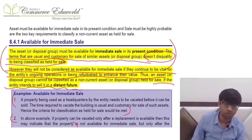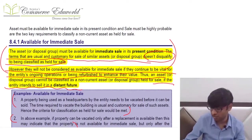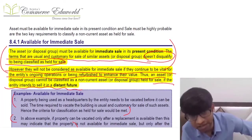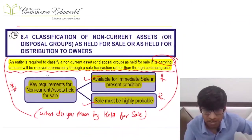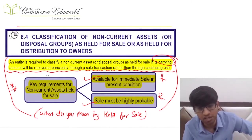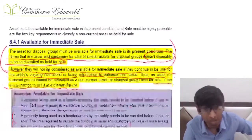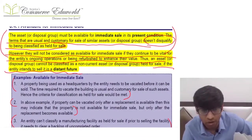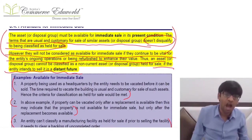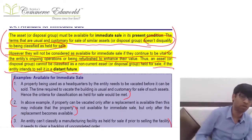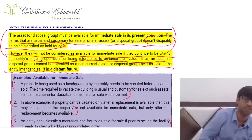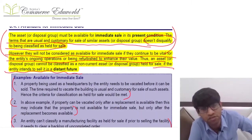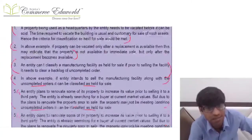However, if an asset is subject to usual or customary terms and conditions — such as selling immovable property where the buyer will inspect and registration will take time — that is acceptable. Such assets can still be considered available for immediate sale in their present condition. But if the asset is vital for ongoing operations or being refurbished to enhance its value before sale, it cannot be considered available for immediate sale.